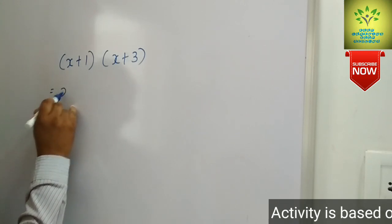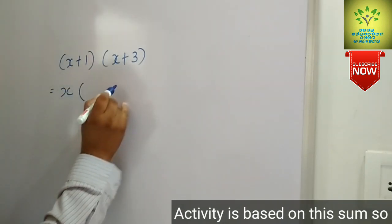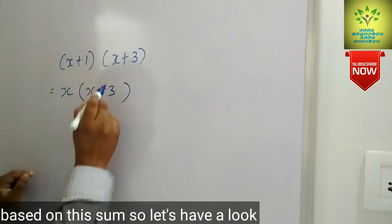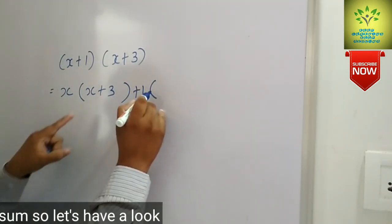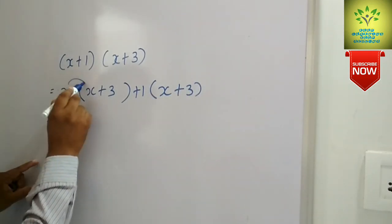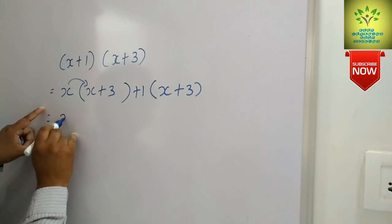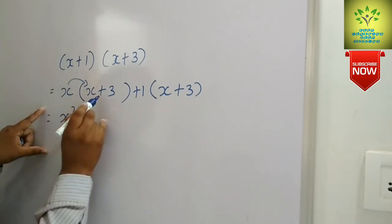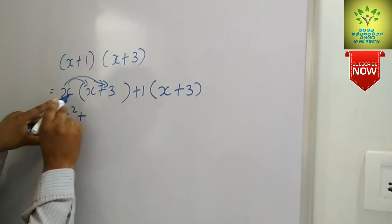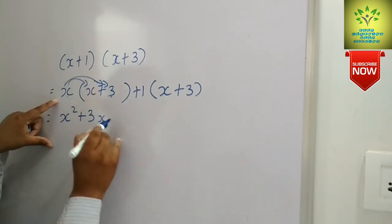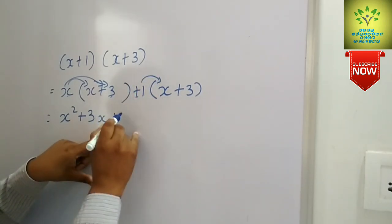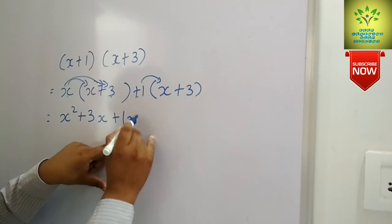For (x+1)(x+3), first we will write x in the bracket with x plus 3, then we will write plus 1 in the bracket with x plus 3. Now we multiply x with the first term x, so x times x is x squared, plus 3 times x is 3x.